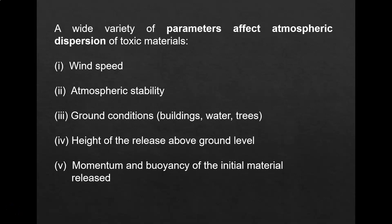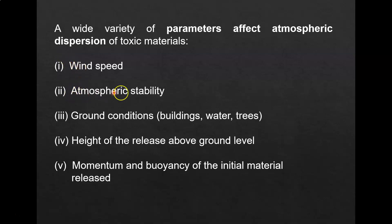This is video two on toxic release and gas dispersion modeling. In this video, you will learn about the variety of parameters that affect the atmospheric dispersion of toxic material. The first parameter is wind speed, the second is atmospheric stability, the third is ground condition — whether there are buildings, water, or trees — the fourth is the height of release above ground level (hr), and the fifth is the momentum and buoyancy of the initial material release.